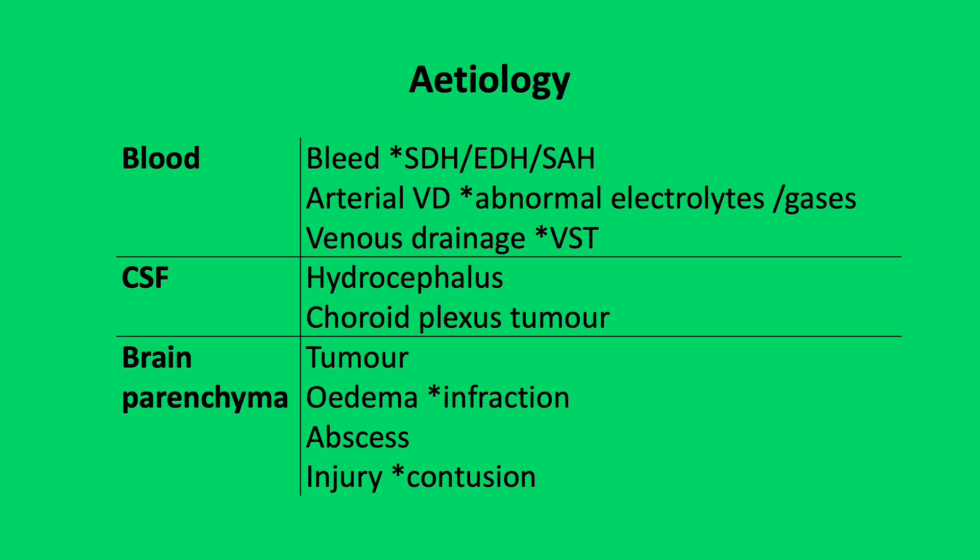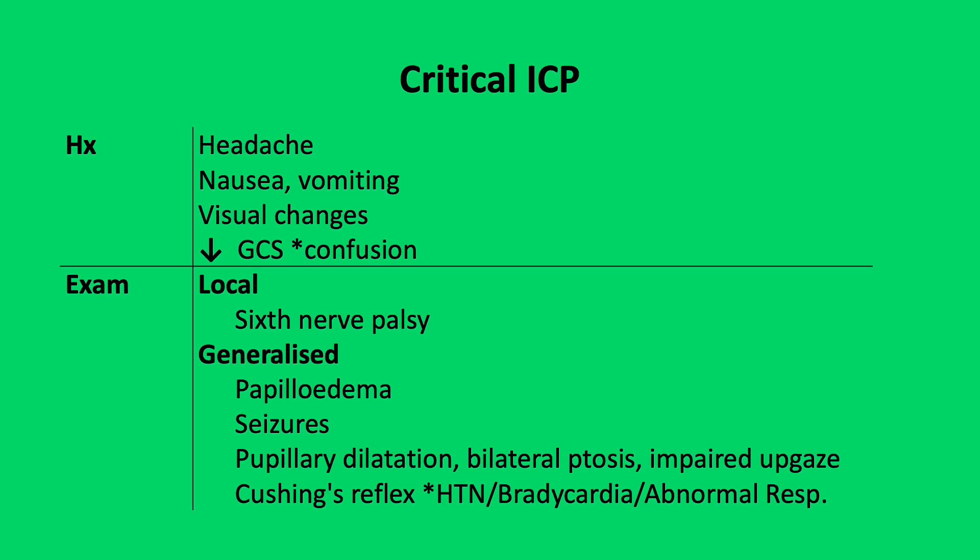As there are three components within the skull — blood, CSF, and brain parenchyma — additional volumes of each of these components can result in a raised ICP. For example, blood: a bleed, a subdural, extradural, or subarachnoid haemorrhage. For CSF: hydrocephalus. Or brain parenchyma lesions, such as tumours or cerebral oedema from cerebral infarction.